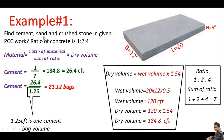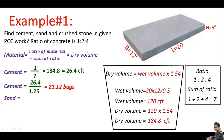Next, let's calculate sand (fine aggregate). You can use the same formula with ratio 2, but there's a shortcut: in a 1:2:4 mix, sand is simply 2 times the cement quantity, and coarse aggregate is 4 times the cement quantity. So if we have 1 part cement, sand is 2× and crushed stone is 4× — which is also 2 times the sand quantity. Does that make sense?